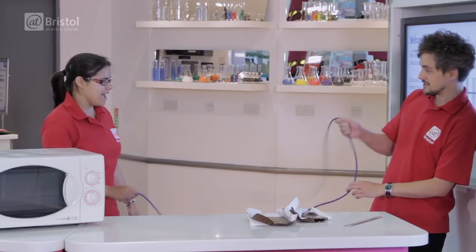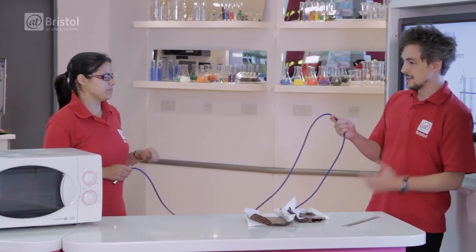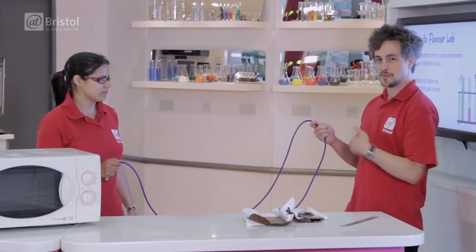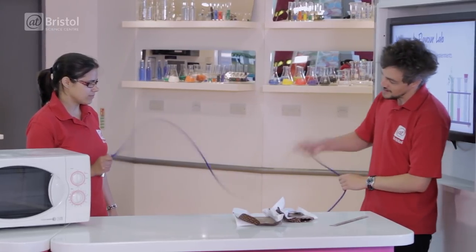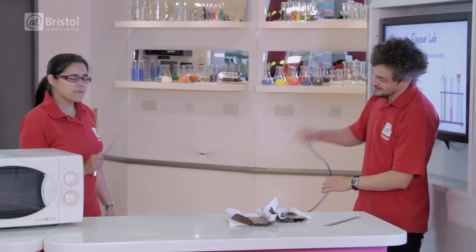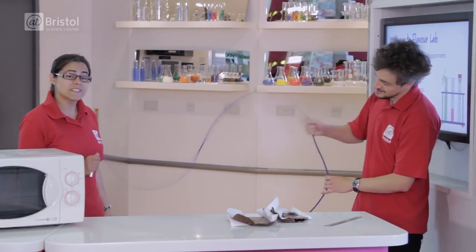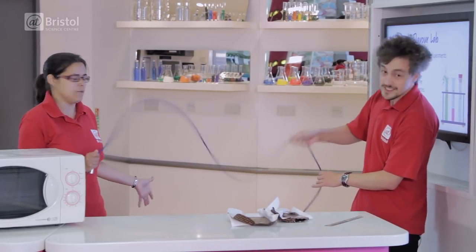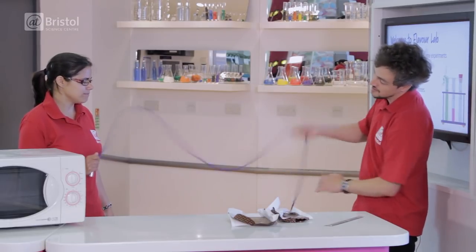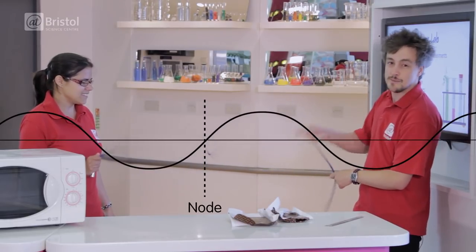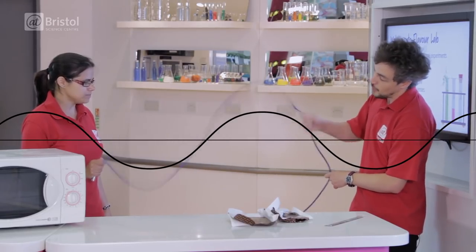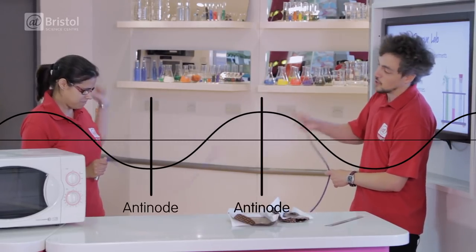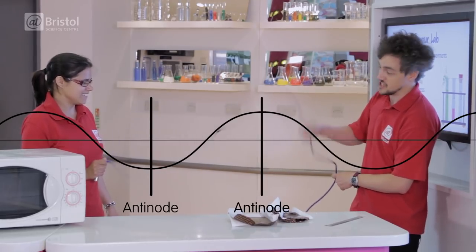If I give Ross this cable and add some energy to it, it travels from me to Ross. But the waves in a microwave don't travel from side to side — instead they go up and down. With a continuous stream of energy, the wave seems to be standing still. This is what we call a standing wave. The point in the middle is called the node — the point of lowest energy — and the top and bottom of the wave are called the anti-nodes, which are the points with the most energy.